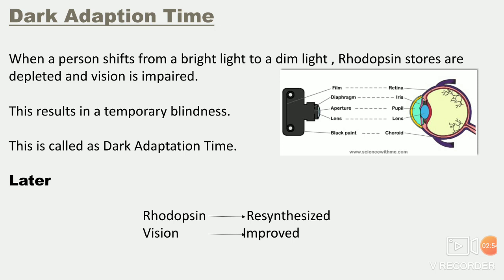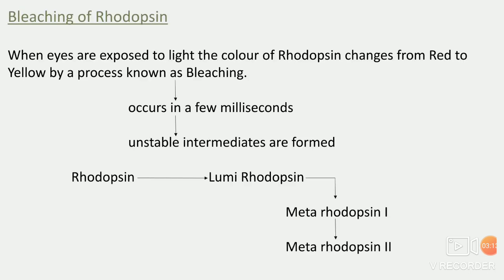The time required for the person to shift from bright to dim light is called dark adaptation time. Later what happens is the rhodopsin that was depleted in the eye gets re-synthesized — re-synthesized मतलब reproduce होगा — और vision improve होगी.